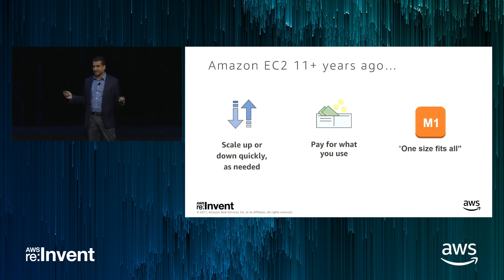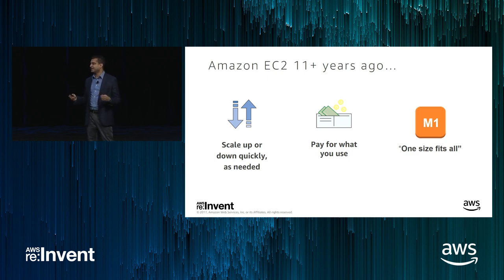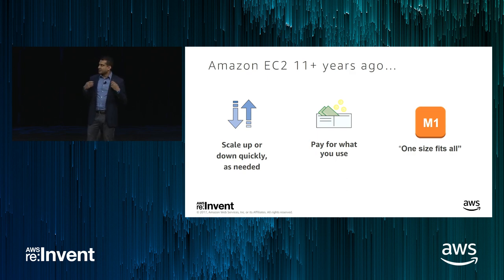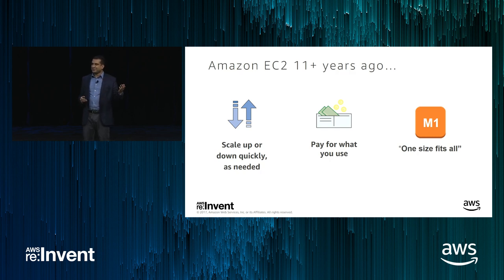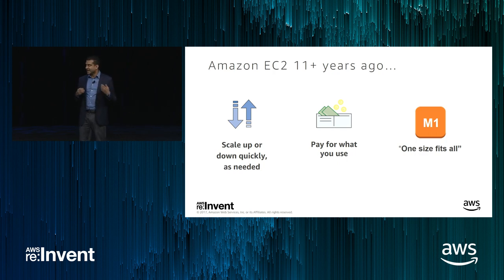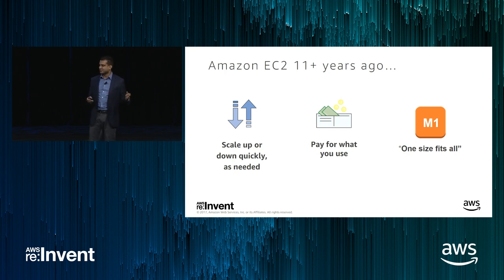Eleven years ago, EC2 was one of the first AWS services. We had a couple of goals: create compute as a service that you can scale up or down quickly, and enable customers to pay for what they use instead of making large upfront capital expenditures. The first instance had one vCPU and 1.7 gigs of memory. Those first two principles — elasticity and utility-based billing — still hold true. But customers told us one size doesn't fit all, and we've been working furiously to meet those needs.